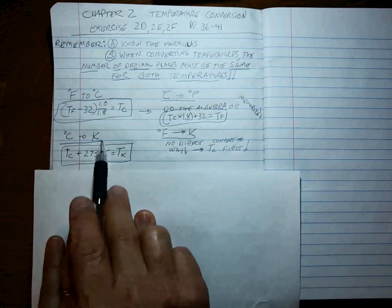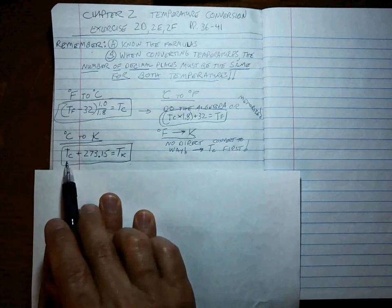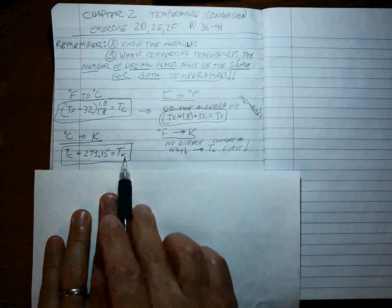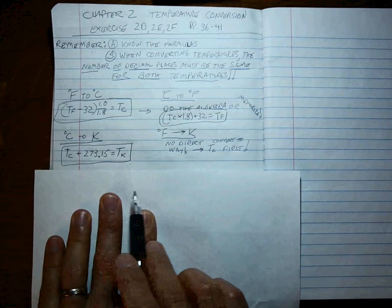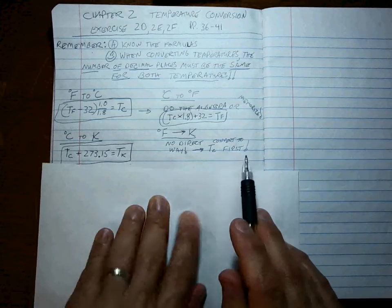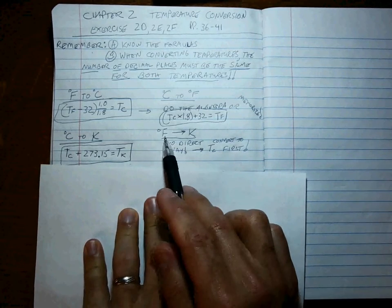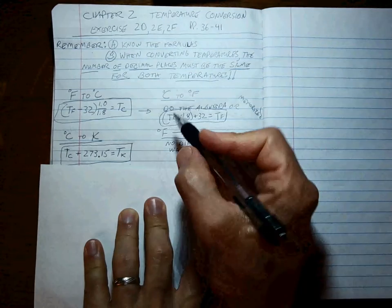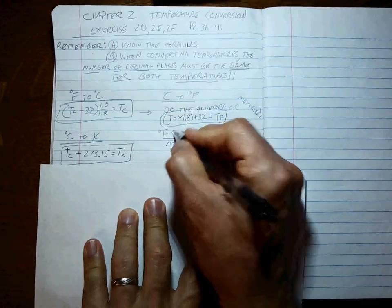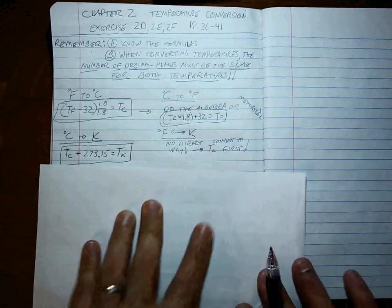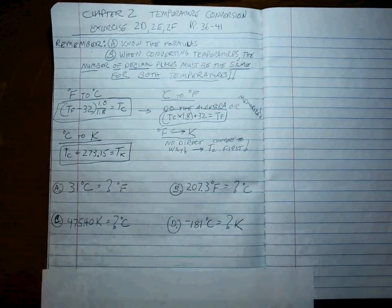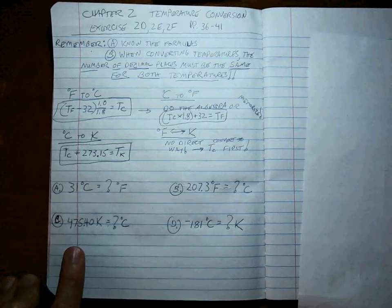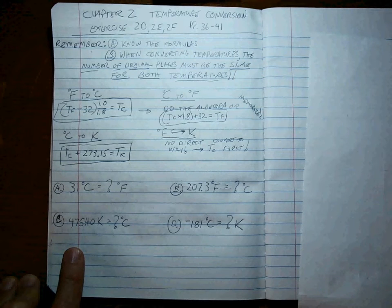Of course, from Celsius to Kelvin or Kelvin to Celsius, you can use the temperature in Celsius plus 273.15 to get you the temperature in Kelvin. And then finally, remember, there is no Fahrenheit to Kelvin or Kelvin to Fahrenheit conversion. You have to go to Celsius first. Okay, so here are four problems that you ought to be able to do pretty simply.